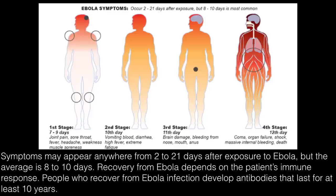In the third stage, on the 11th day, there is brain damage and bleeding from the nose, mouth, or even rectal bleeding. In the fourth stage, after the 12th day, there is coma, organ failure, shock, massive internal bleeding, and even death. The symptoms appear anywhere from 2 to 21 days after exposure, with the average being 8 to 10 days.